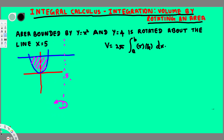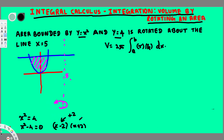To do this problem we need the limits of integration, the radius, and the height. To find the limits of integration, we equate the two equations: x² equals 4. Rearranging gives x² minus 4 equals 0, which factors as (x minus 2)(x plus 2) equals 0, giving x equals plus 2 and minus 2. Those are the limits of integration.